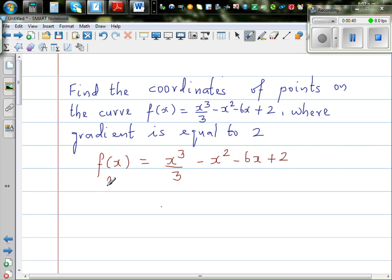So the question is, f dash x, or the derivative, is given to be 2. And we want to find x, or from x we can find y, by putting back in this equation. So these are the two things, you've got f of x, and f dash x is equal to 2, because the gradient is given to be 2.